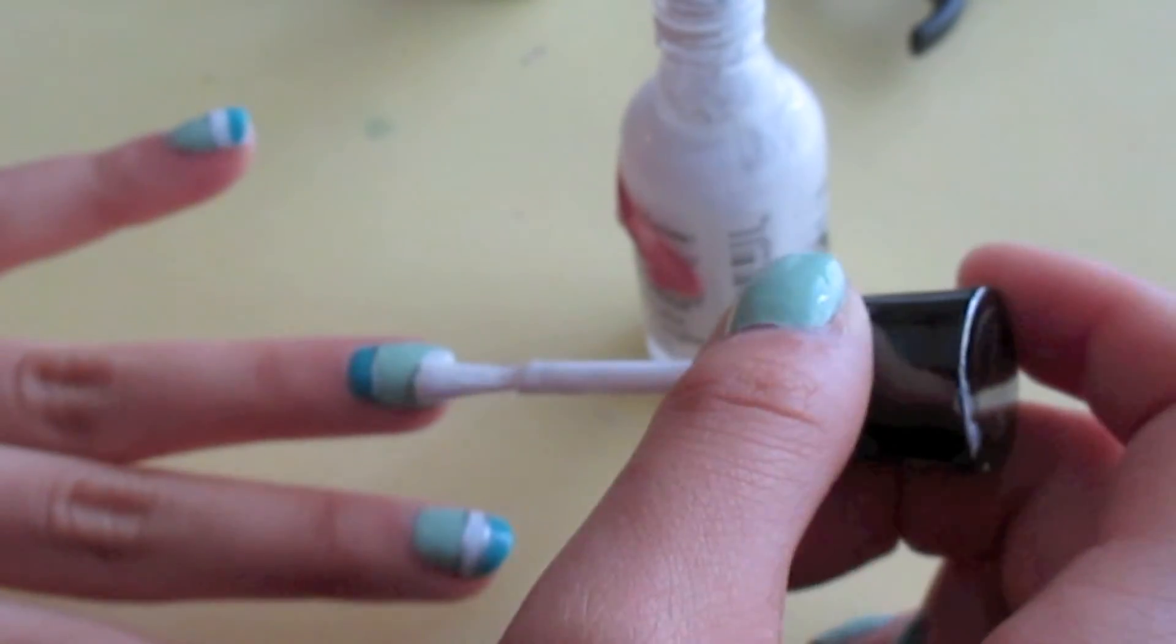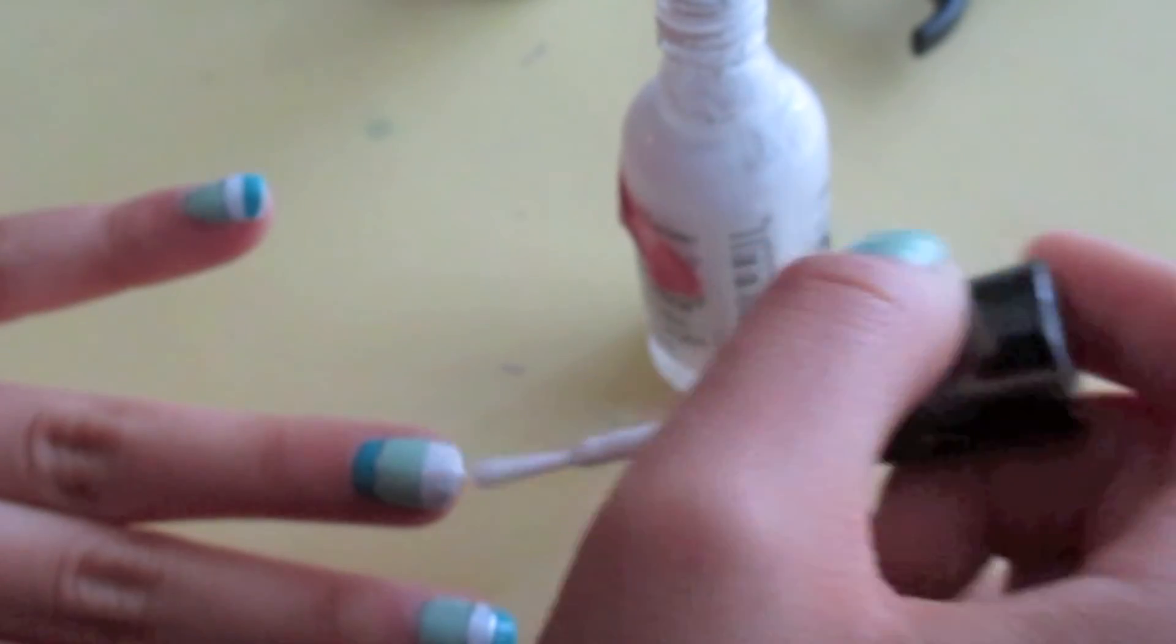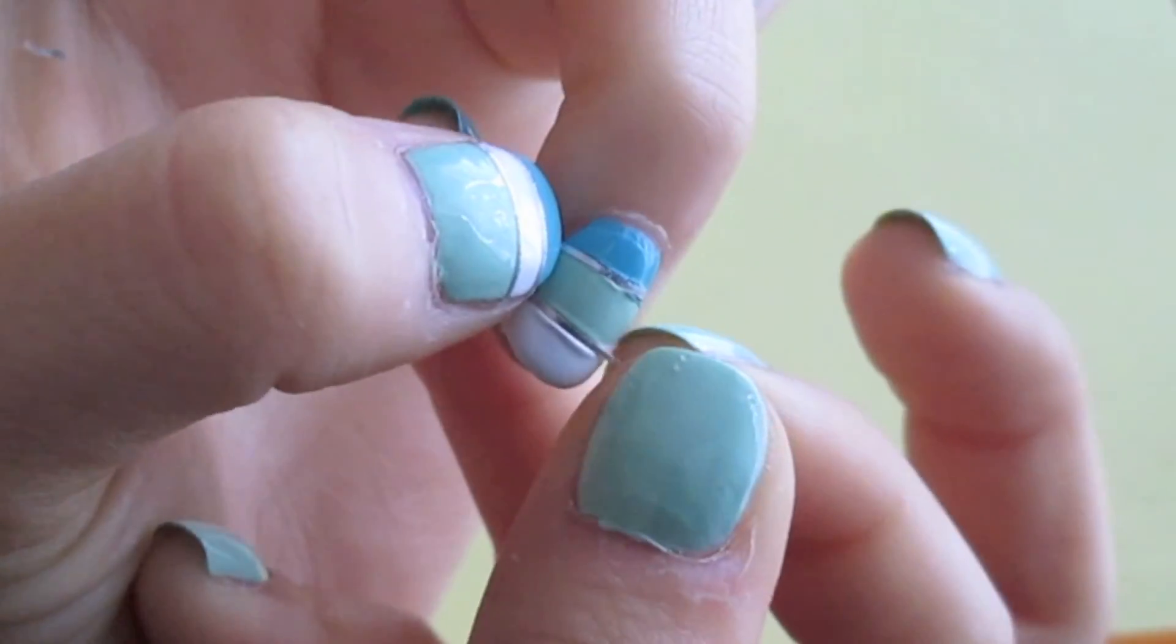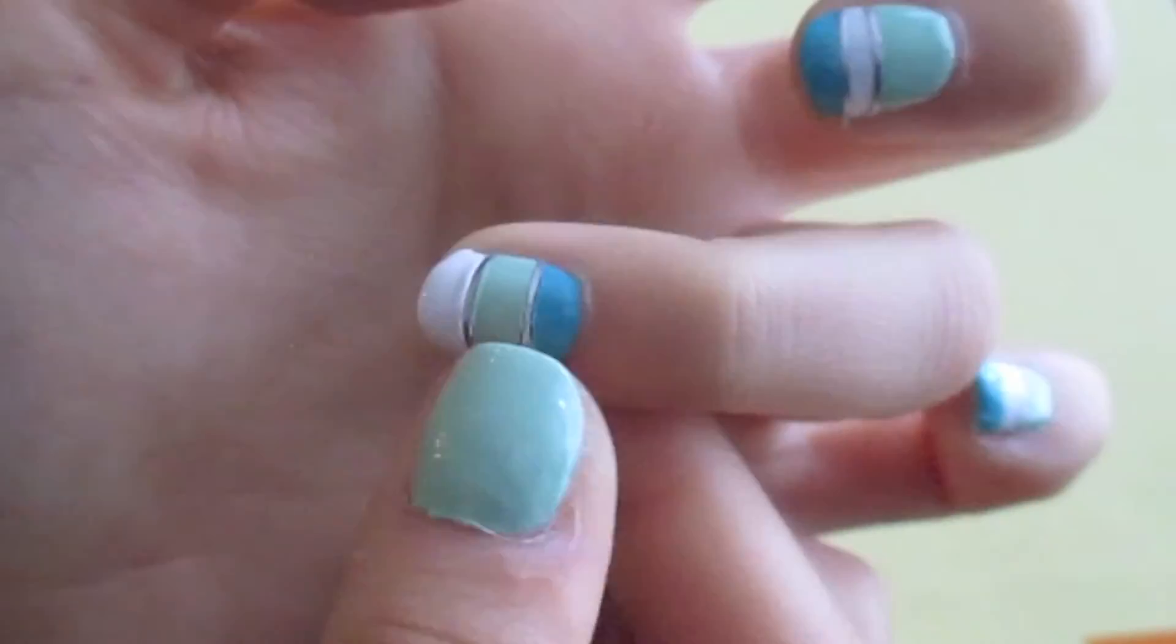Once that dried, I added white polish to the top half of the green mint color. And then, yep, you guessed it, you add tape right between the mint and the white color. Seal it off with the top coat and you are all finished.